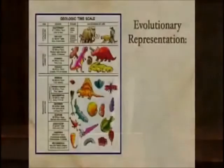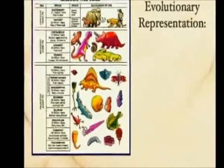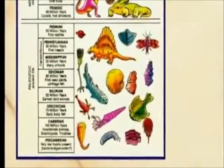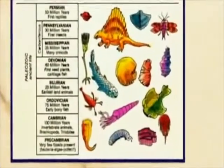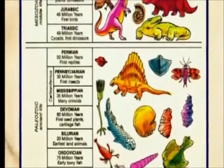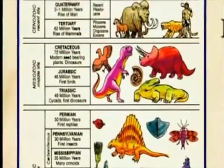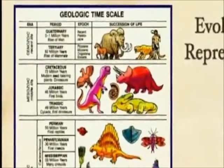But the evolutionary representation of this record of the rocks looks like this. This is in all the biology textbooks, all the earth science textbooks. We are told that as you go further down in the rocks you find simple animals, and as you come up near the top they get more complex, with modern animals near the top — which shows an evolutionary progression.